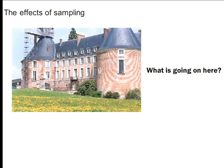So when we have discrete signals — that is to say, when we sample a continuous signal — sometimes weird things happen. Who can tell me what's going on in this picture? Aliasing. So because we lost information about the picture, we have these crazy waves showing up on the image itself.